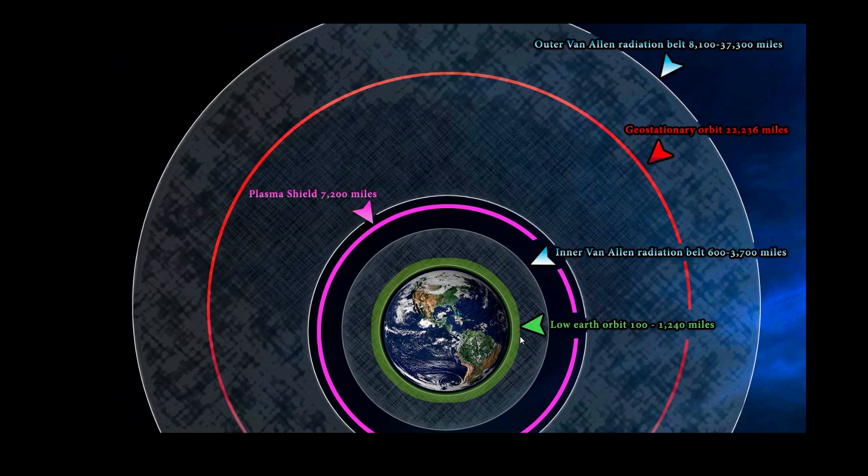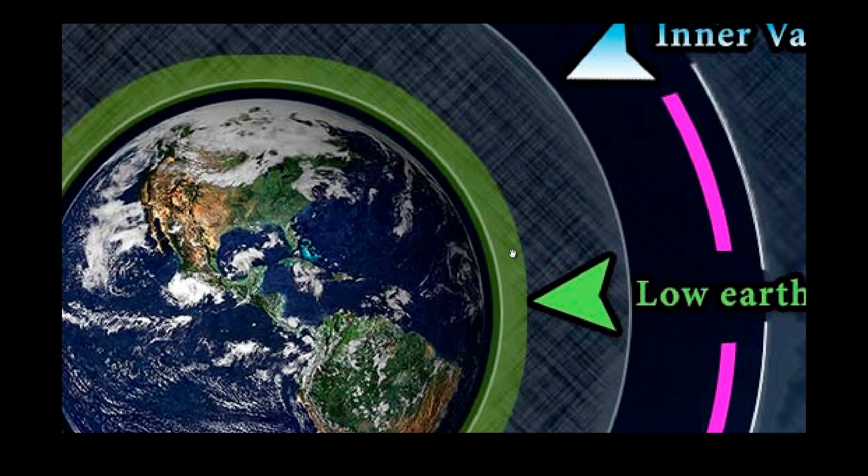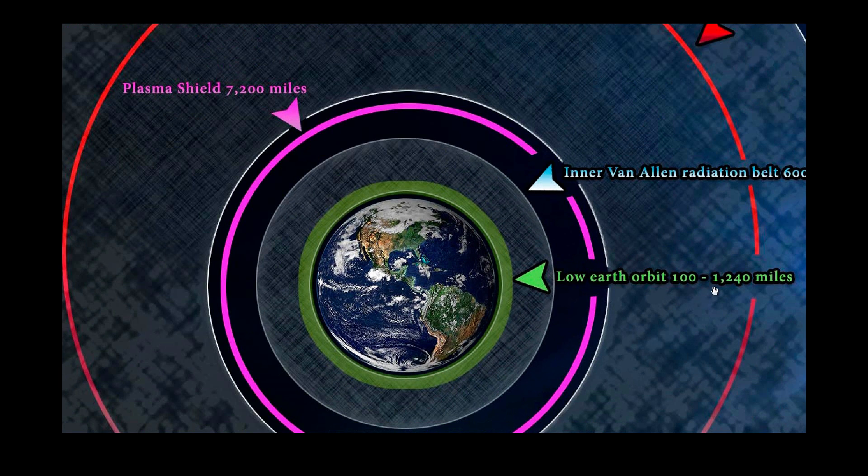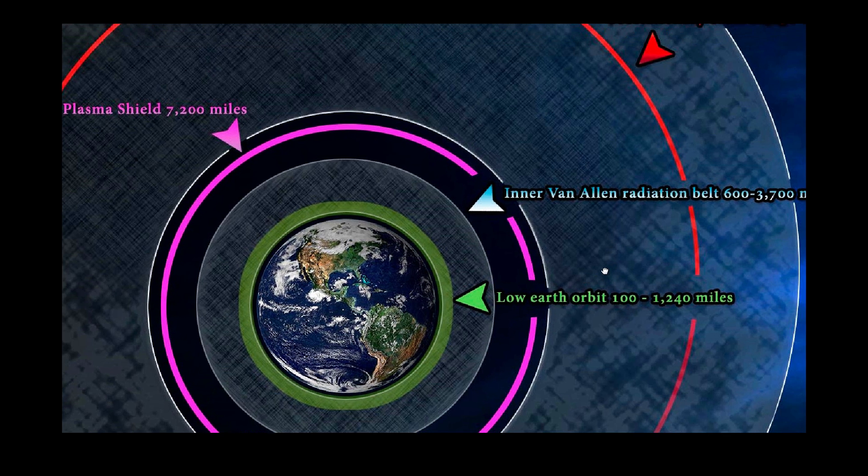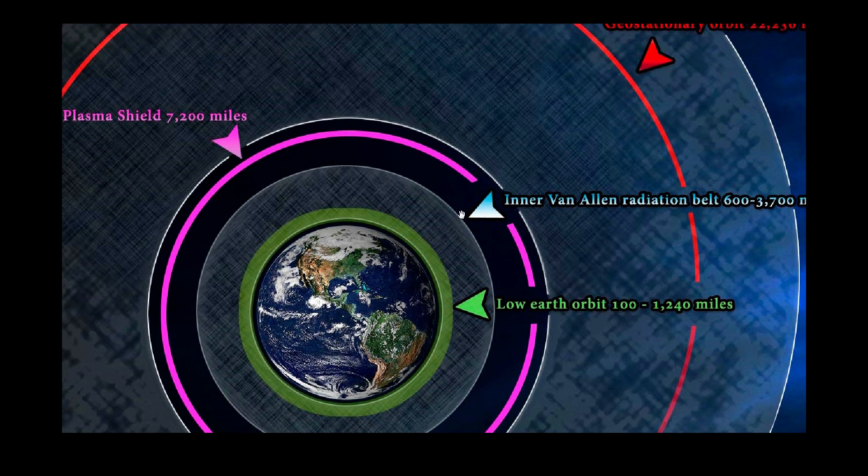And I'm going to cover what that means. So we come into this green strip. This is low Earth orbit. And it is slightly overlapped by this area, which is the inner Van Allen belt. So low Earth orbit goes from 100 miles up to 1,240 miles. And interesting enough, some of the definitions of low Earth orbit start at sea level, which I thought was very interesting.